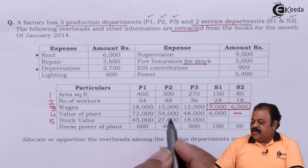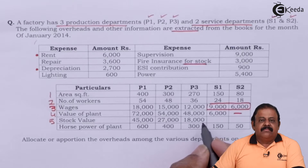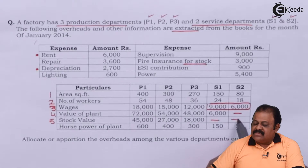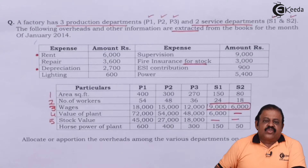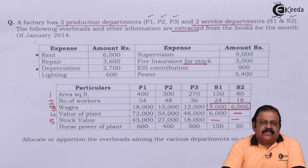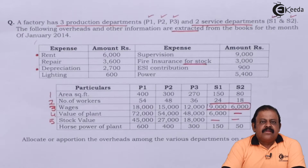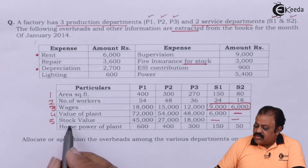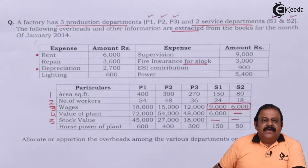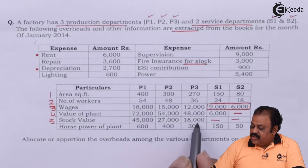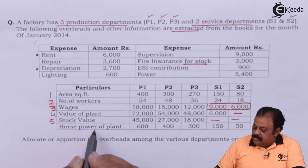Stock value: production department 1 — 45000, P2 — 27000, P3 — 18000. Service departments don't deal in stocks, so only production departments have stock values. Since production departments hold stock, they take out fire insurance. The fire insurance for stock of rupees 3000 will be divided in the ratio of 45 to 27 to 18.